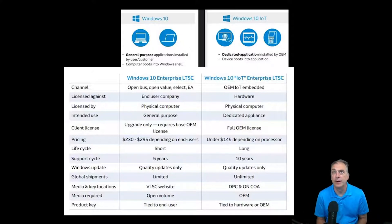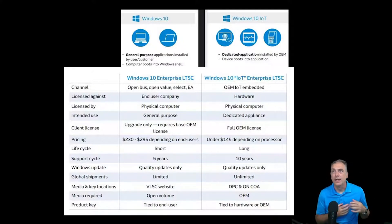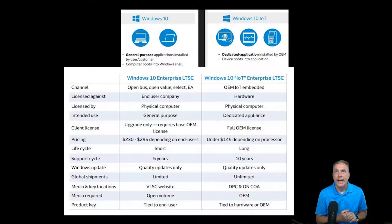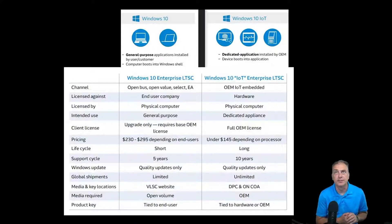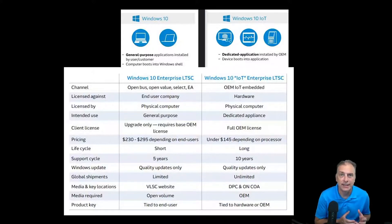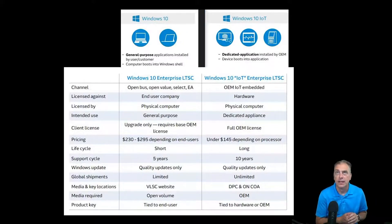Let's go down the chart here and compare them side by side. The only way to get the LTSC version — other than the IoT version — the non-IoT version on the left is through the open volume channel. That comes with a lot of other hurdles. In open volume — open business, open value, select, enterprise agreements — the product is tied to the end user. So when you're placing the order, you have to license it against the end user. You have to provide the end user's company information and an email address, and the product is licensed against the end user's company.